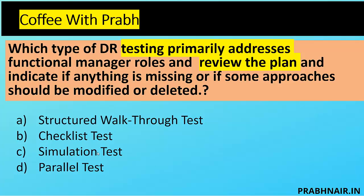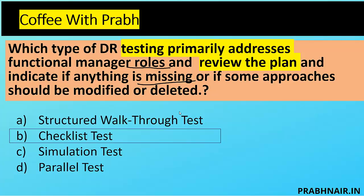For example, a participant raises the concern: 'This person has already left the facility, can you replace this number?' That is how we update the plan in a checklist test. Simulation involves a role-play or fire drill exercise where we try to evacuate facilities. Parallel test means we perform at an alternate site. The question focuses on keywords: role, missing, and modify — so the answer is B, checklist test.